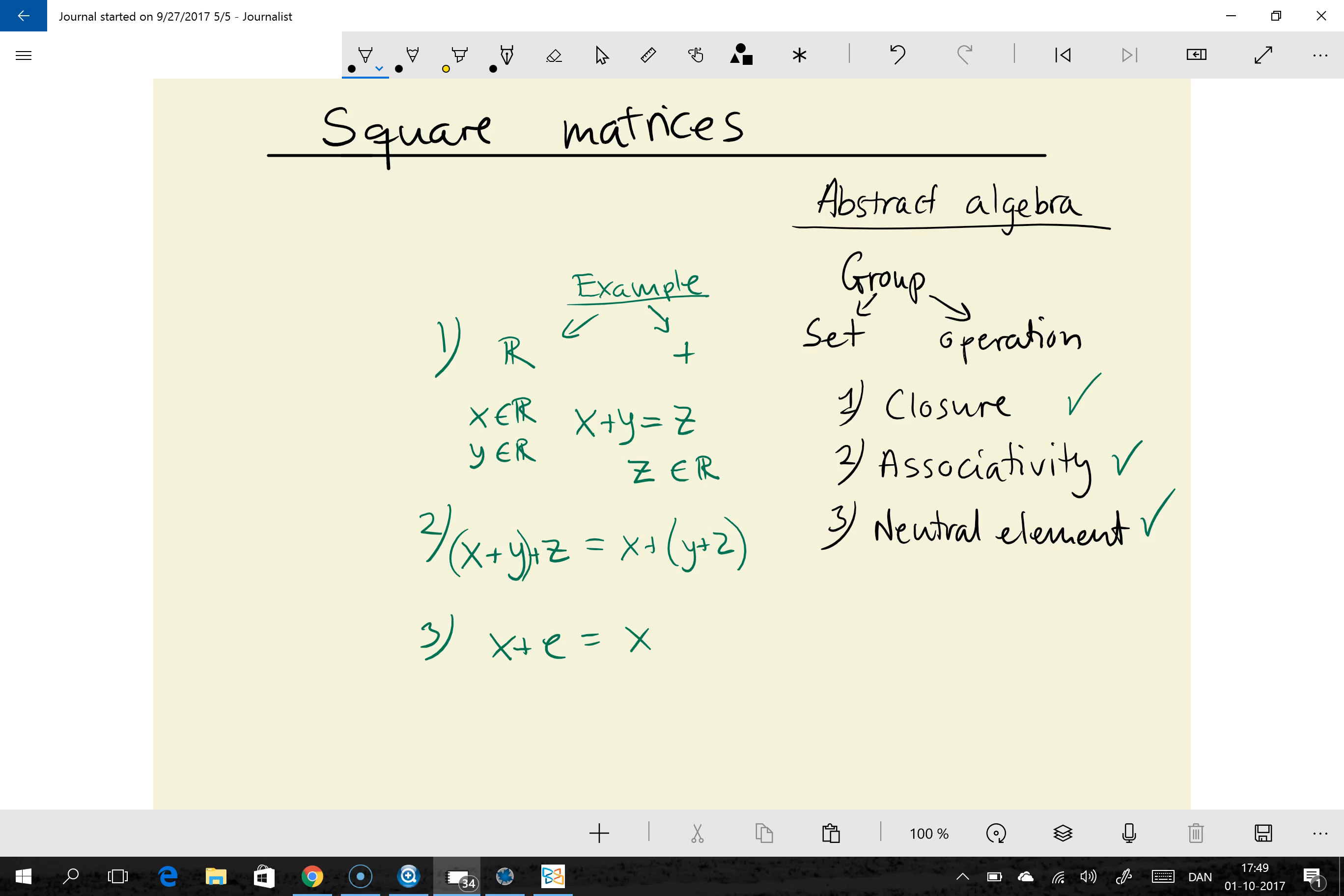And then there's the last requirement which is the existence of an inverse element. And that just means that for every element in the set, in this case the real numbers, there should be another element, we could call it x star, which is also part of the set. And this element x star should satisfy this requirement that when you add it to the element you get the neutral element.